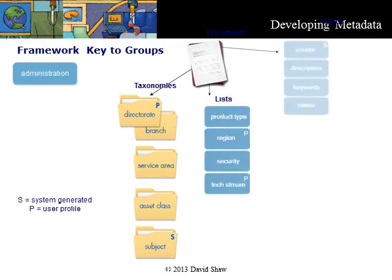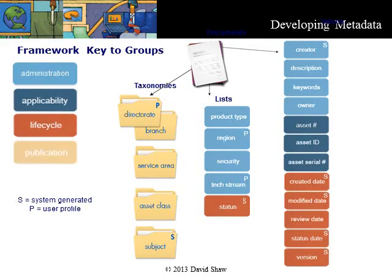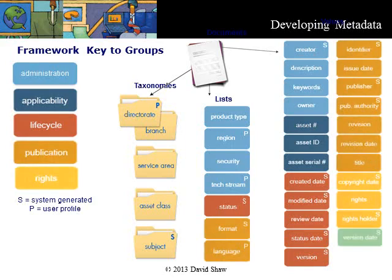Views or groups can be organized in a framework to help design how the metadata will be implemented. This is a real-world example for a complex technical area. S indicates system generated and P indicates extracted from the user profile. This leaves 13 fields that the user needs to complete — this is a high number, and a good objective is around 7. Another way to reduce the burden on the user is to designate some user fields as required and make others optional. Optional means we would really like you to provide this information to make life easier for everyone, but we won't force you.